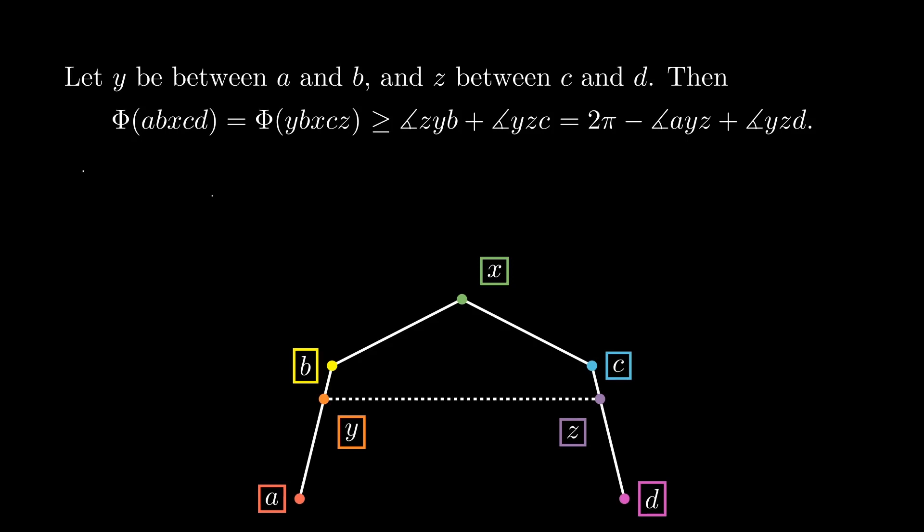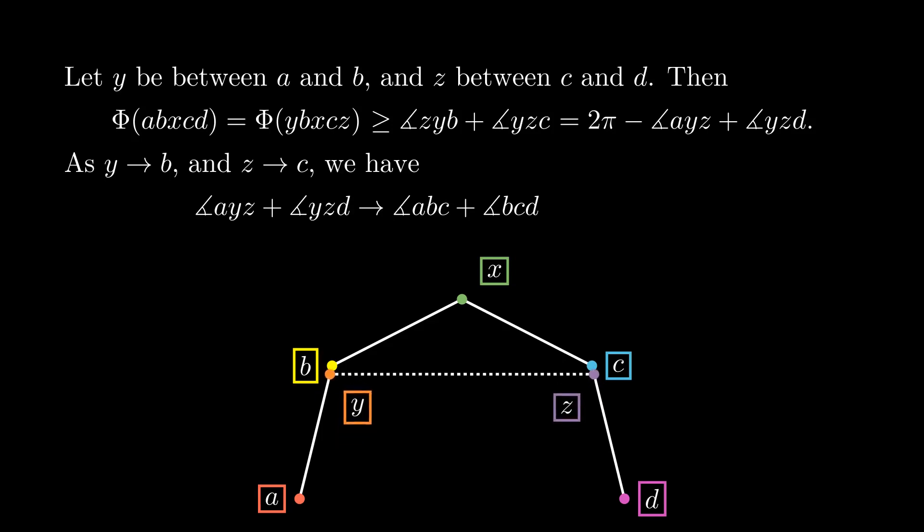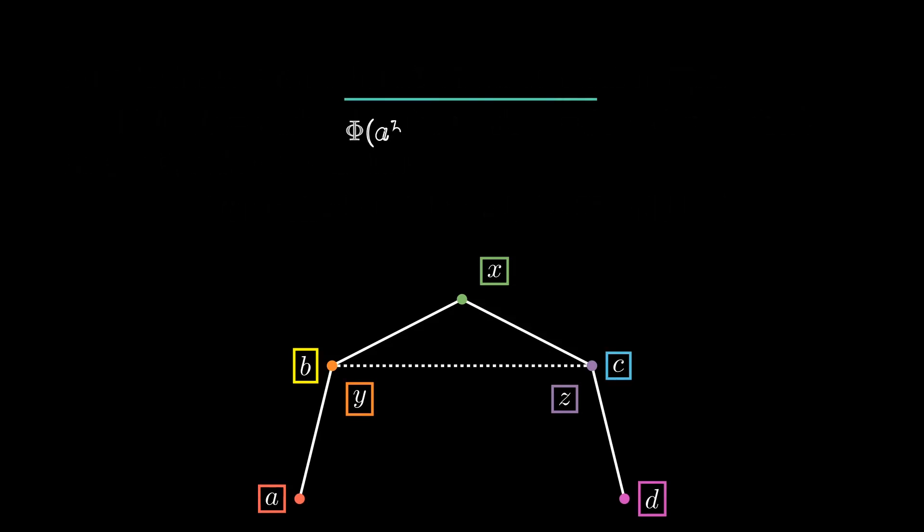By taking complementary angles, this is 2π minus the angles ayzd and yzdc. And as y approaches b and z approaches c, these two angles approach the angles abc and bcd, which are 2π minus the total curvature of abcd. Combining the two expressions, we conclude that the total curvature of abcd is at most the total curvature of abxcd.